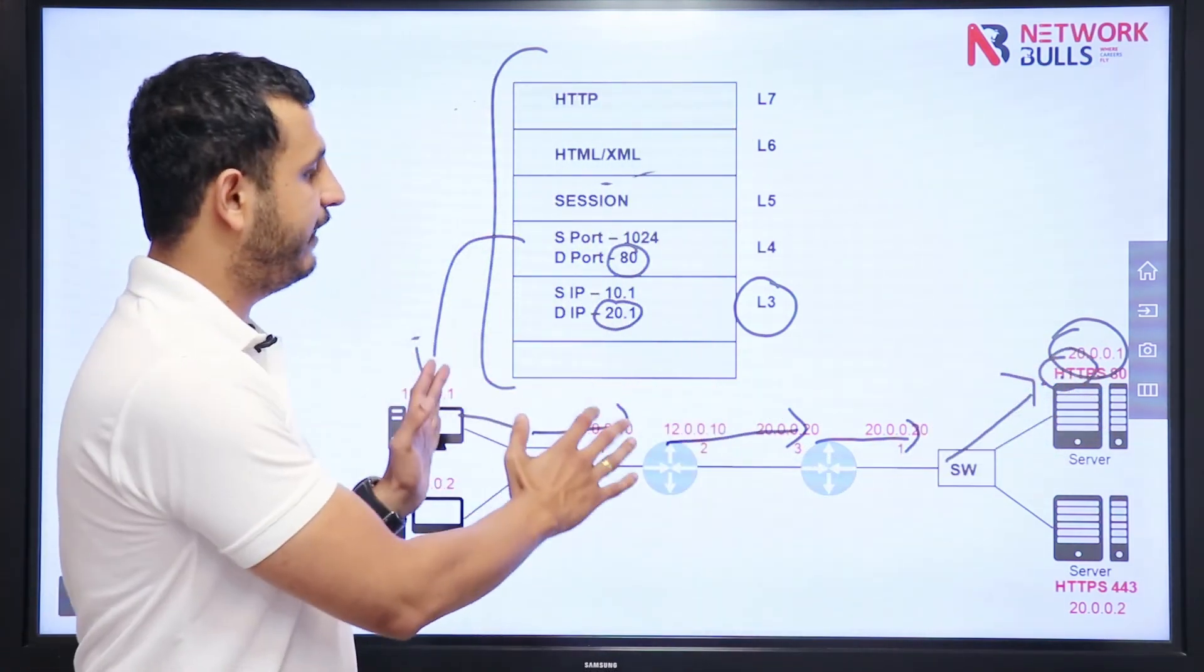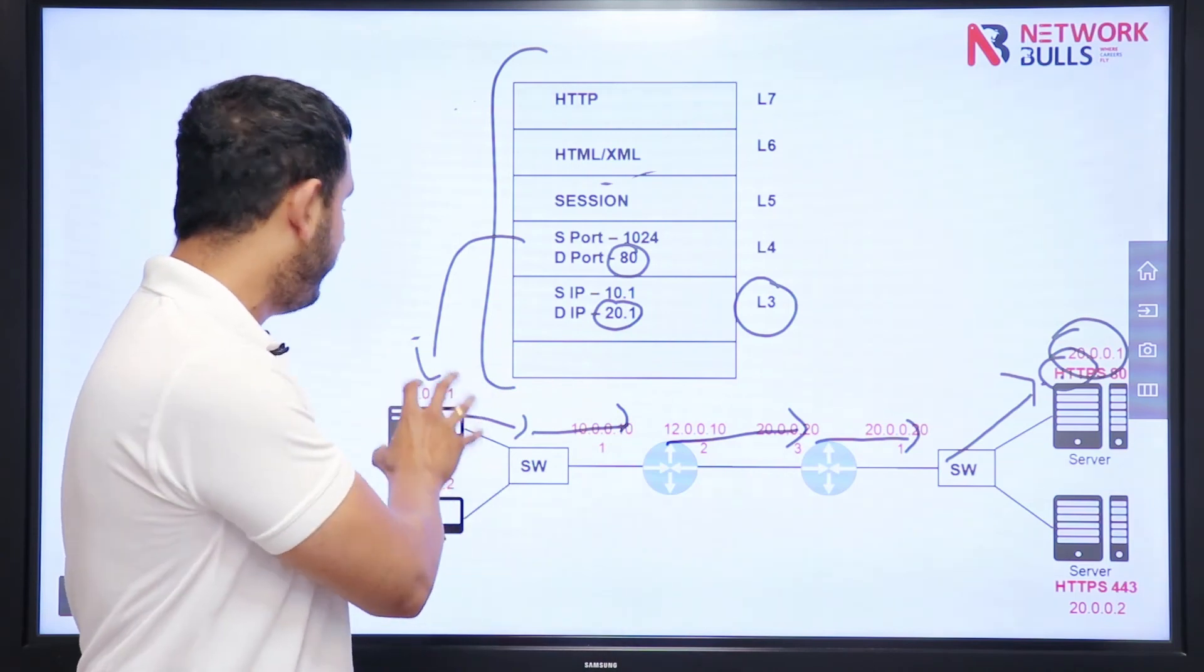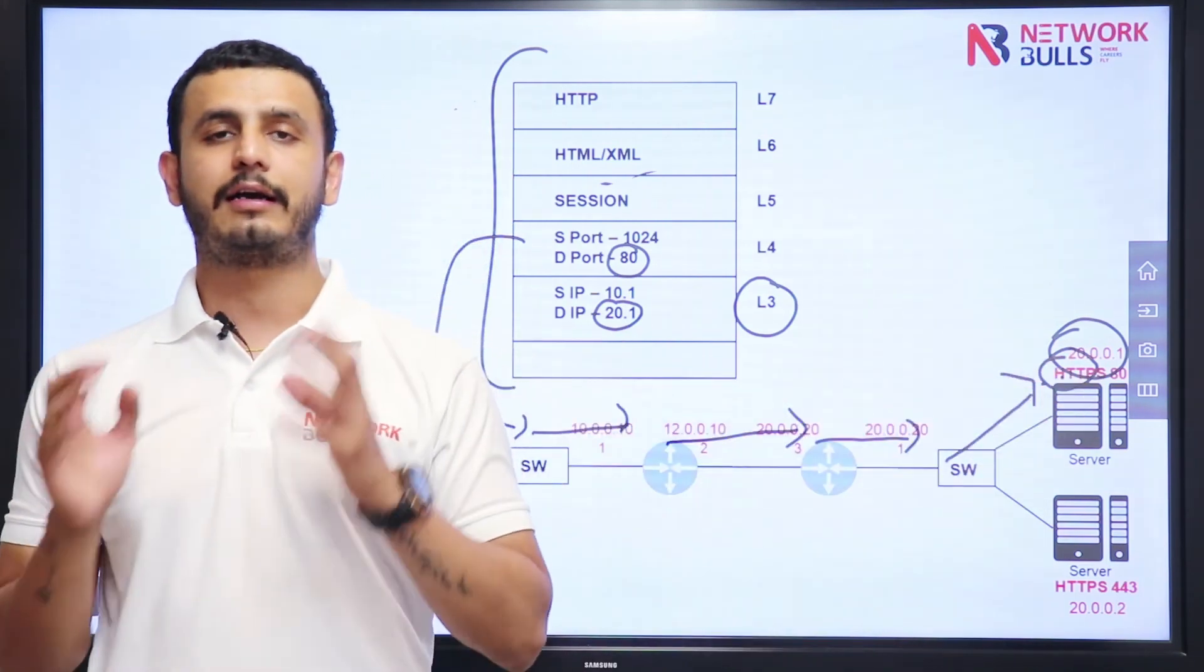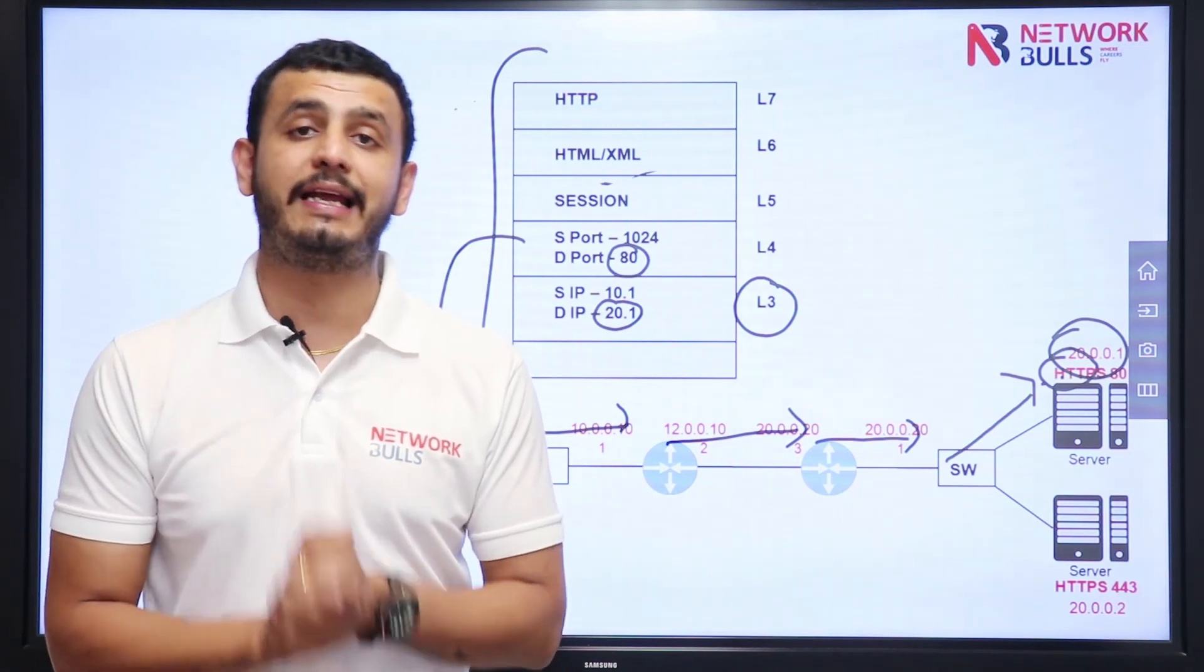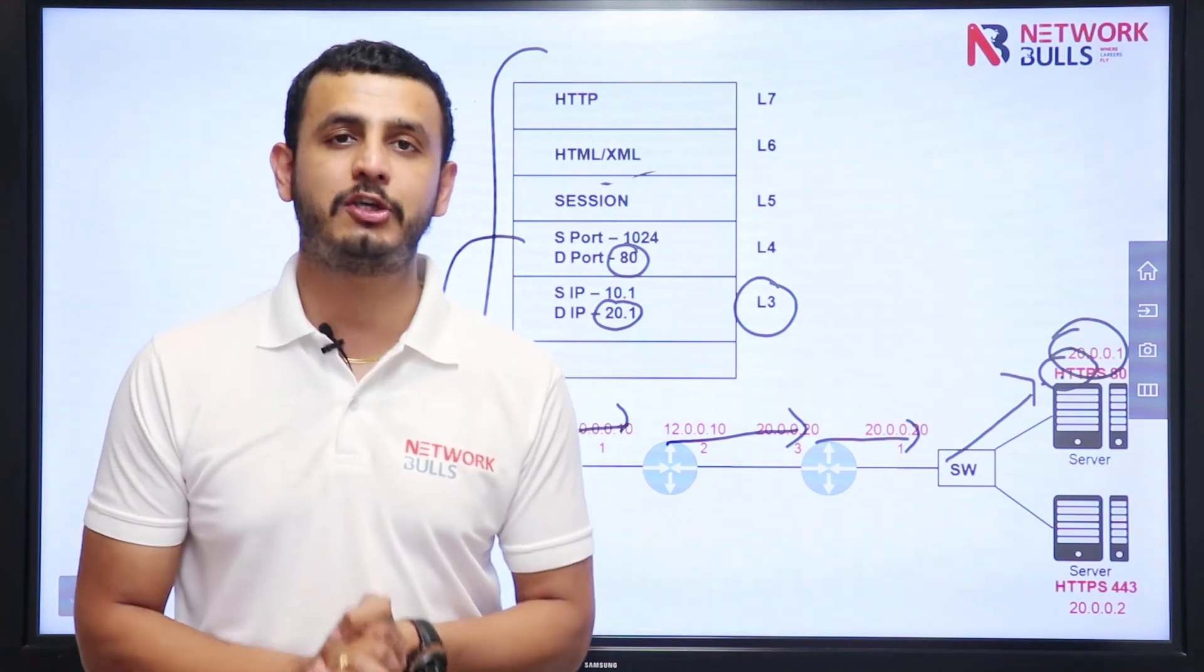So this is how IP addresses will be used to send information from a source to a destination. In this video we have discussed how network layer works in the OSI model. Thank you.